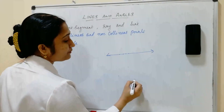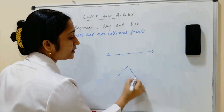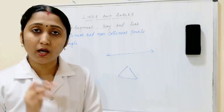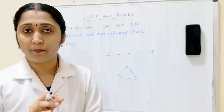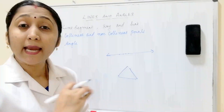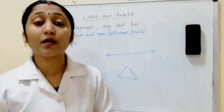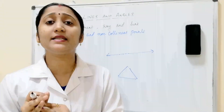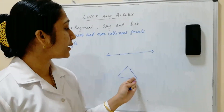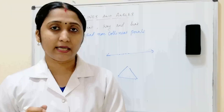If three points form a triangle — meaning they do not all lie on the same line — those three points are non-collinear. The three corners of a triangle have three points, and since they do not all lie on the same line, these three points are non-collinear.